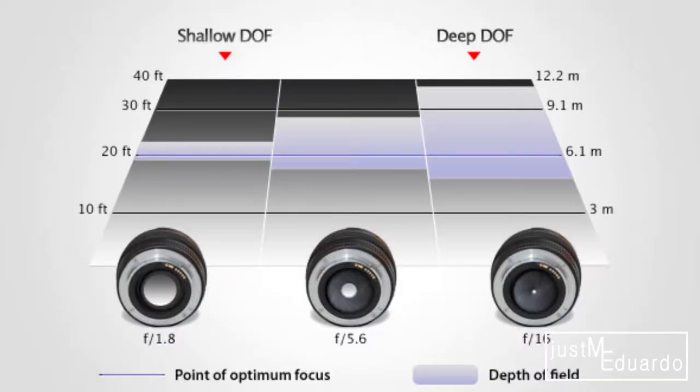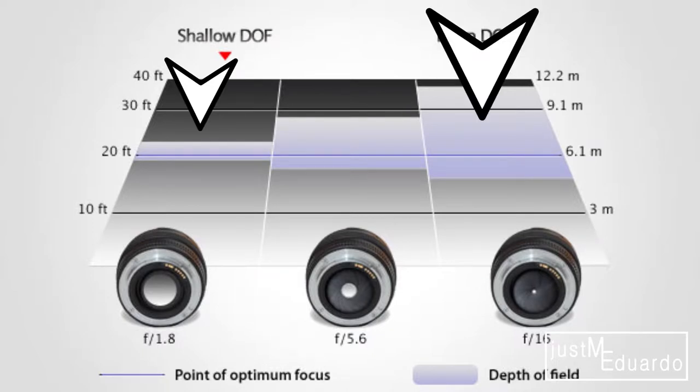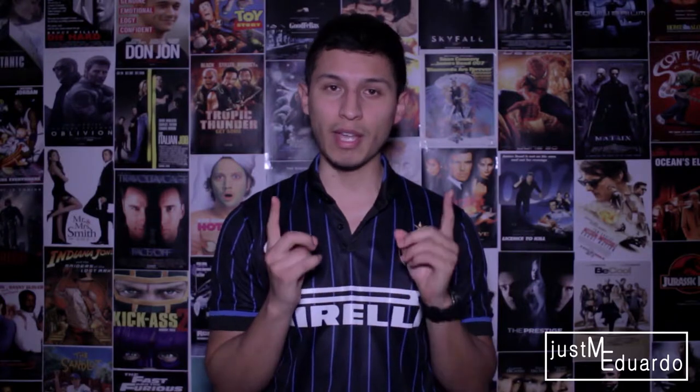Now, that area of focus can be either really small or it can be really big. And that's what we are going to jump into next — the two different categories that depth of field gets broken down into.